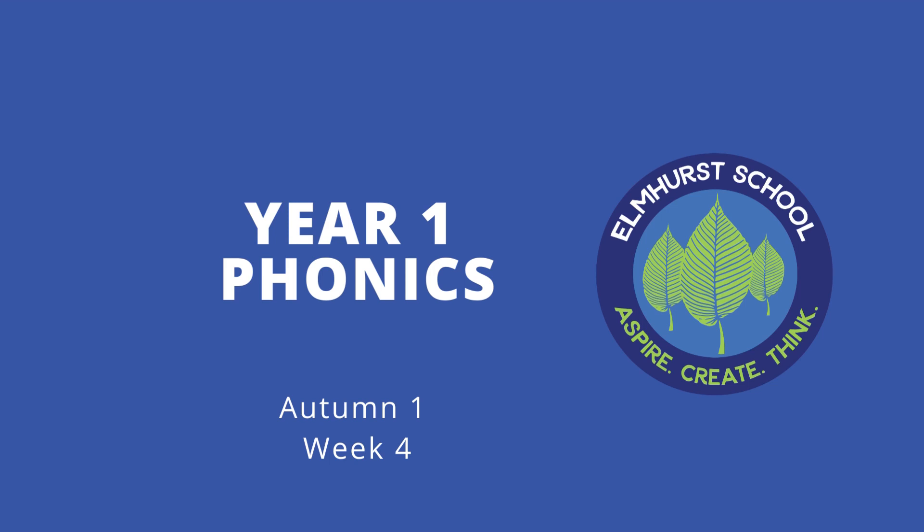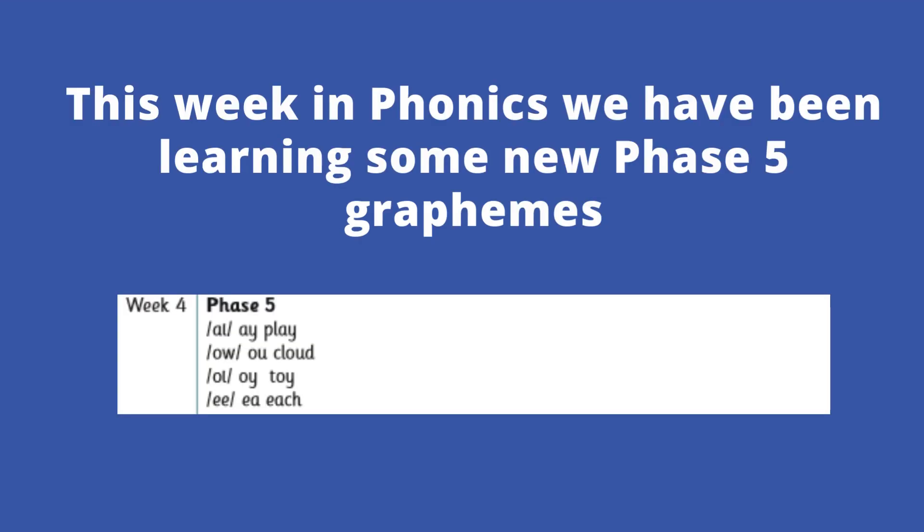Hello everyone, welcome to Year One Phonics, Autumn One, Week Four. This week we have been learning the new Phase 5 graphemes. We've been learning alternative ways to make the A sound, the O sound, and the E sound.